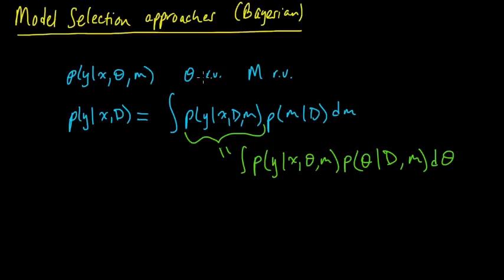Theta is not a complexity-controlling parameter — all the complexity-controlling parameters are over in M. Theta is the parameters being used to fit the data. By integrating over theta, we're already averaging over those, so this is not overfitting. You can think of this as averaging over the probabilities predicted under each of these different models, where the weights are the posterior distribution on the model given the data.